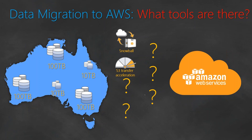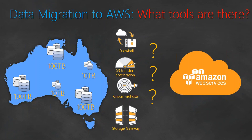Kinesis Firehose is another service. If the incoming data is from a mobile device, a gaming device, or an IoT device, you can configure Kinesis Firehose on one end, store all the data in S3, and push the data from the source to the destination. That's another way of moving the data.